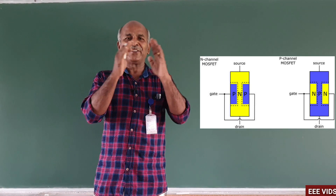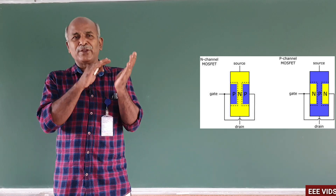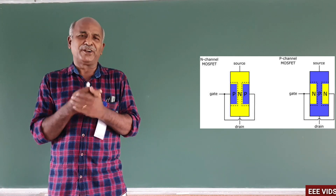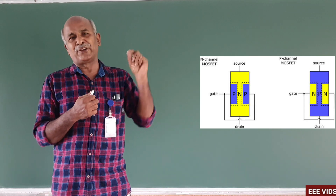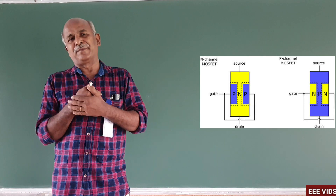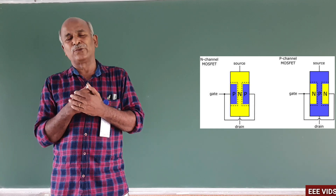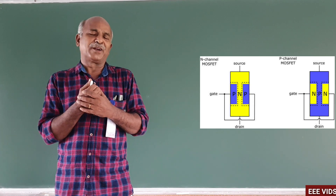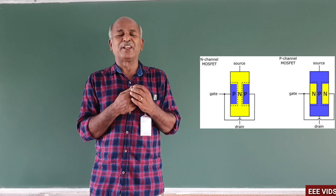We add p-type material on two sides of the n-type bar surface, forming two p-n junctions. The bar has two ends: one end is the drain and the other end is the source. The two junctions form the gate terminal.